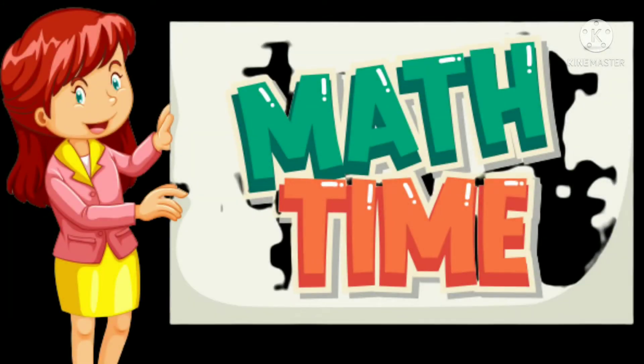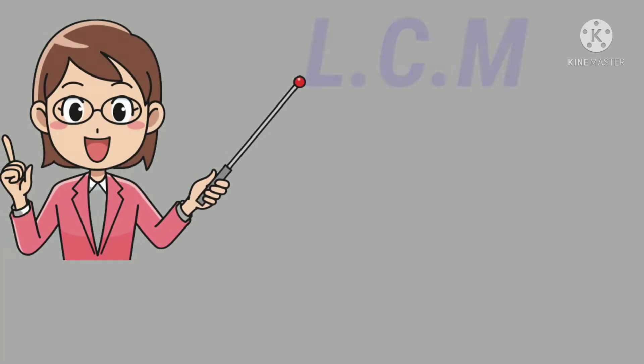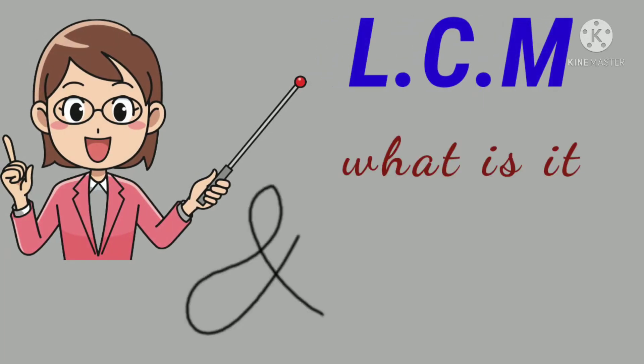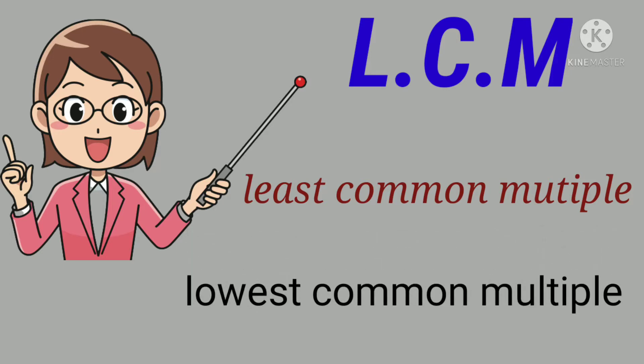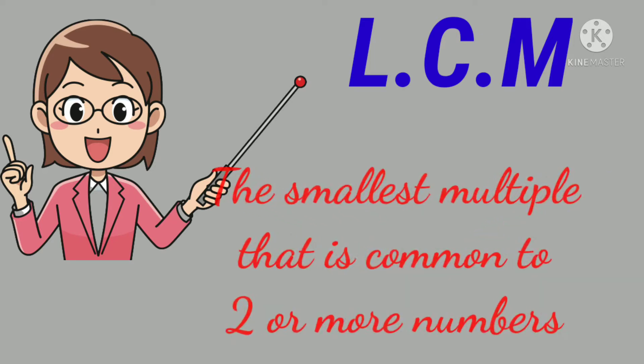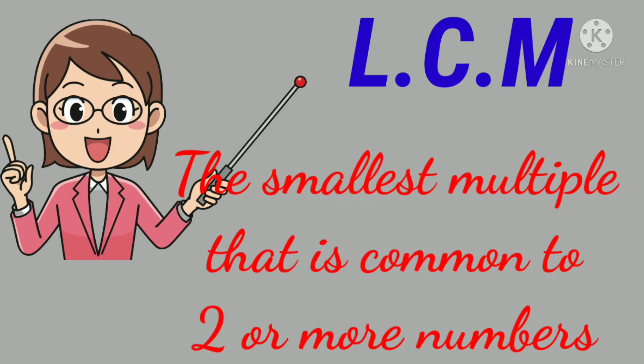Hello children, today we will study LCM, how we can find it and what is it. So LCM is least common multiple or lowest common multiple. The smallest multiple that is common to two or more numbers is called LCM.